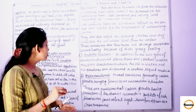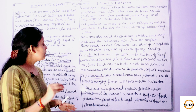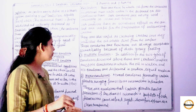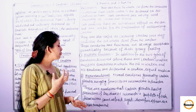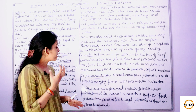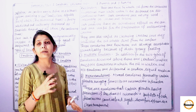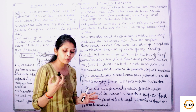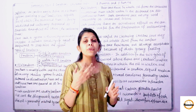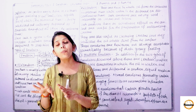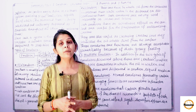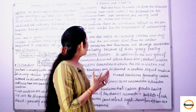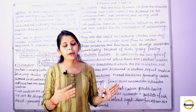Droplets of such dimensions cannot reflect light. Therefore, microemulsions appear as clear and transparent. Because the droplet size is so small, light is not reflected, and that is the reason these emulsions are transparent. This is a key property and part of the definition of microemulsions.